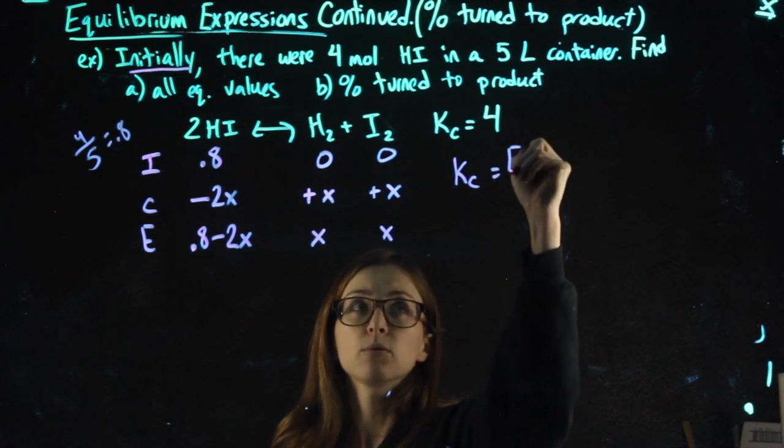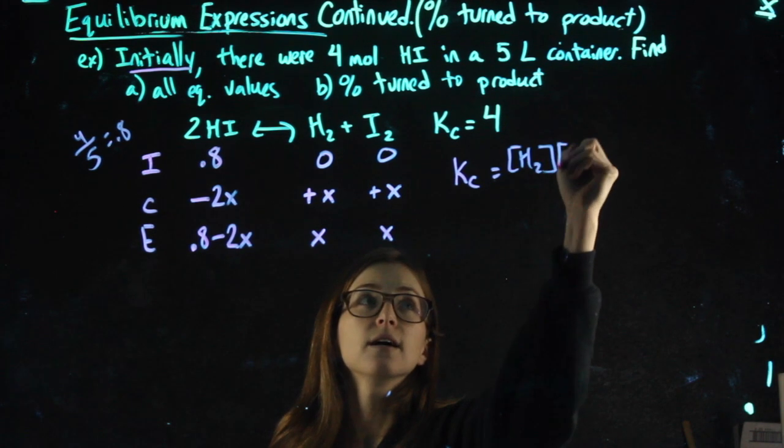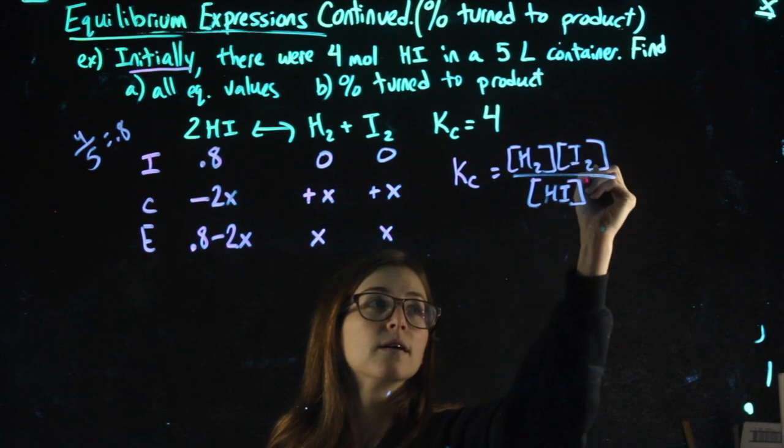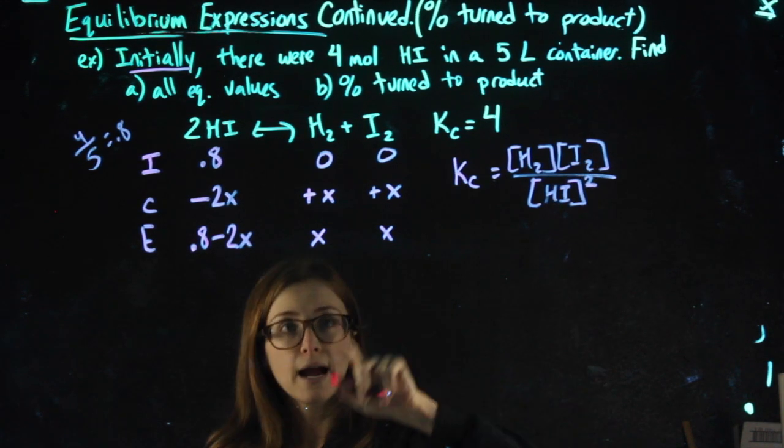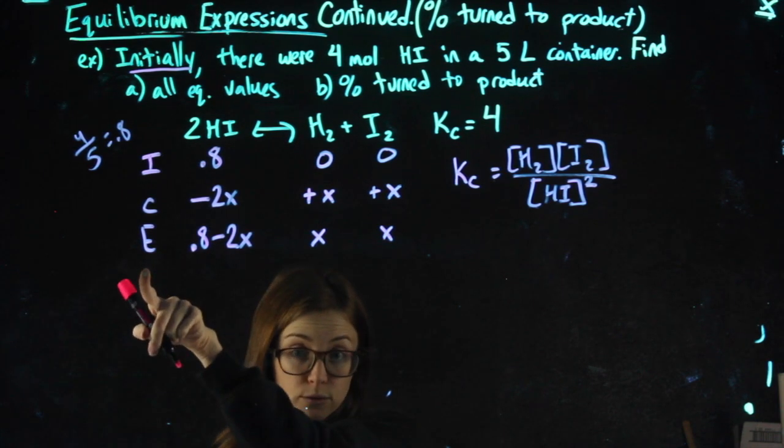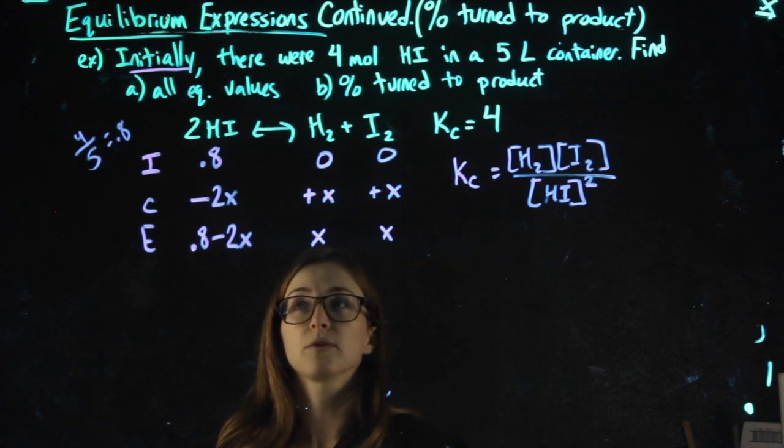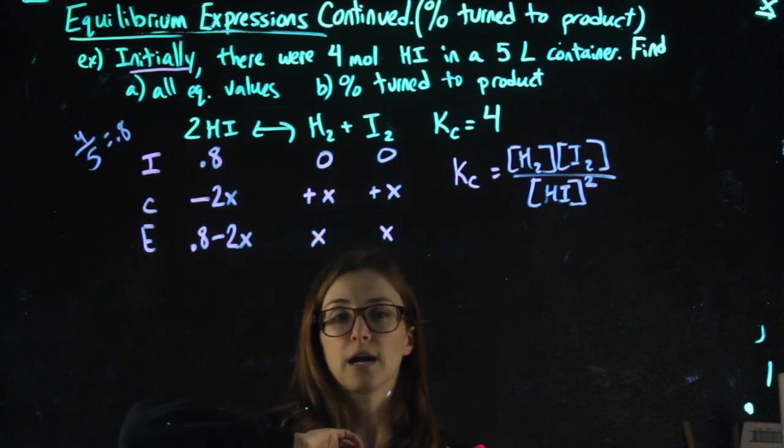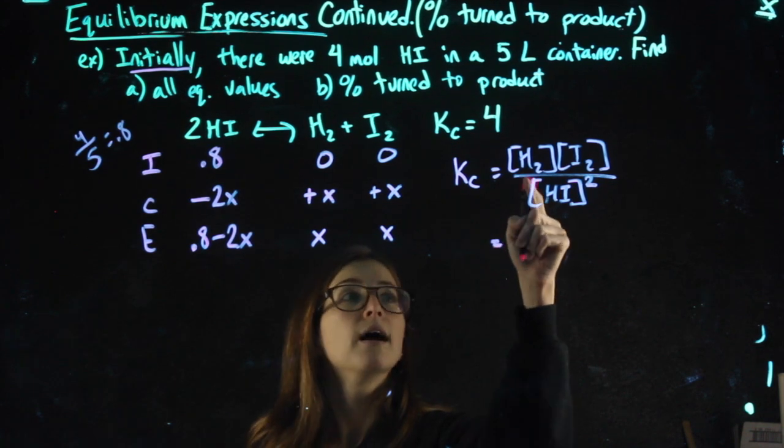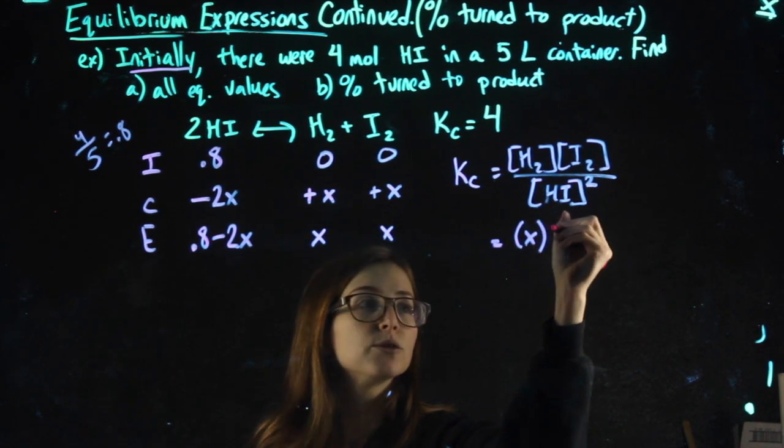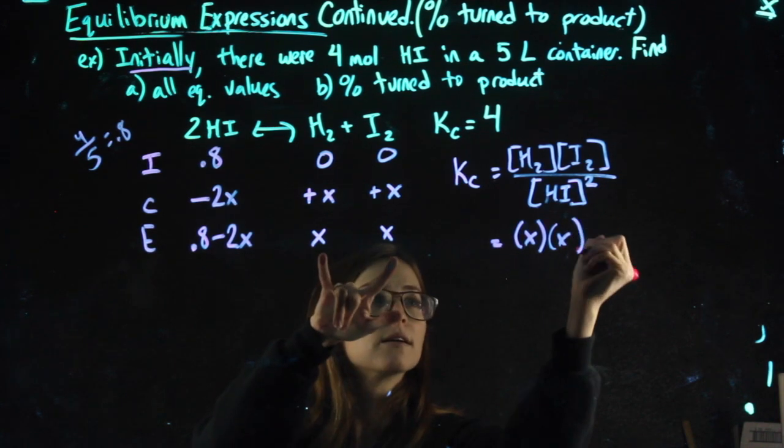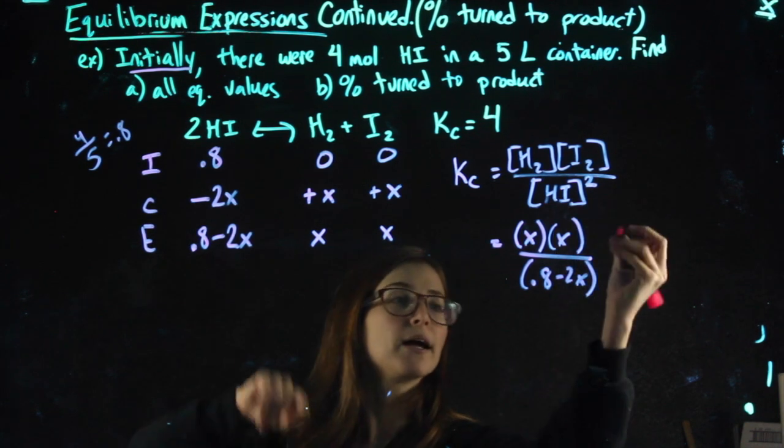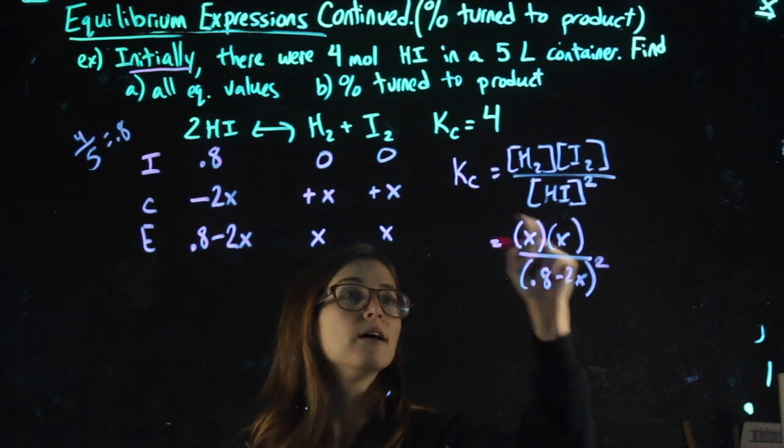If I were going to do an equilibrium expression, products over reactants—you get a point for writing it with no numbers, no X's plugged in—I can now plug in my equilibrium values even though they have X's. I can never plug initial values in, so those values should not appear in my equilibrium expression. H2 is X, I2 is X, HI is 0.8 minus 2X, and my expression says to square it.